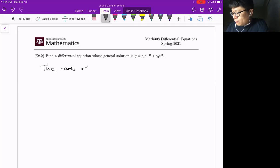The roots of the equation are, let's say, R1 which is negative 4, and R2 which is 3. Then we can easily set up the characteristic equation from these two roots.